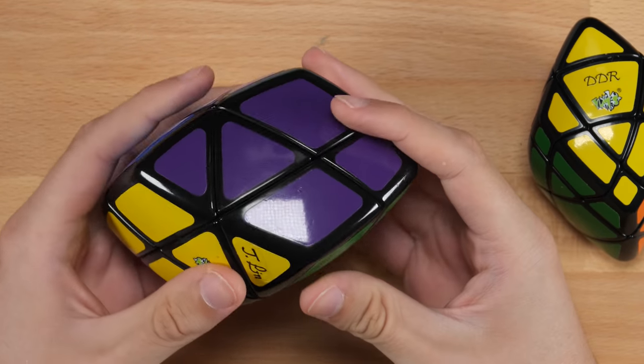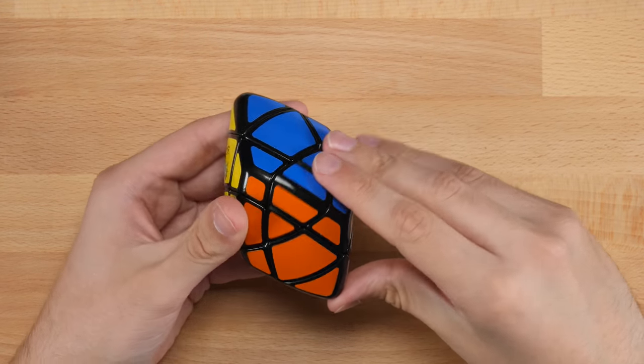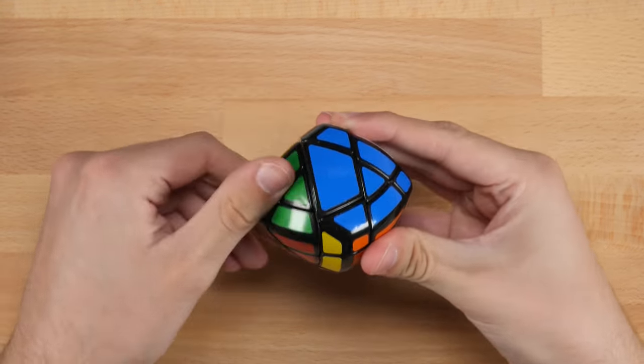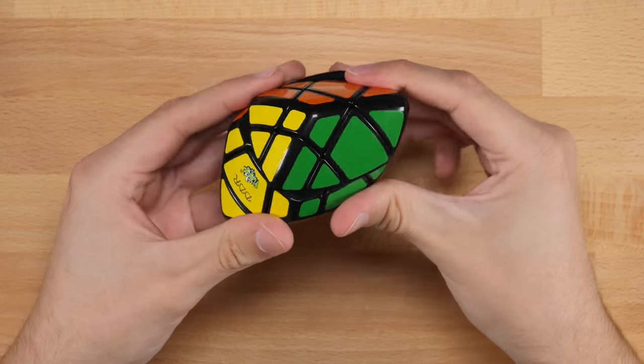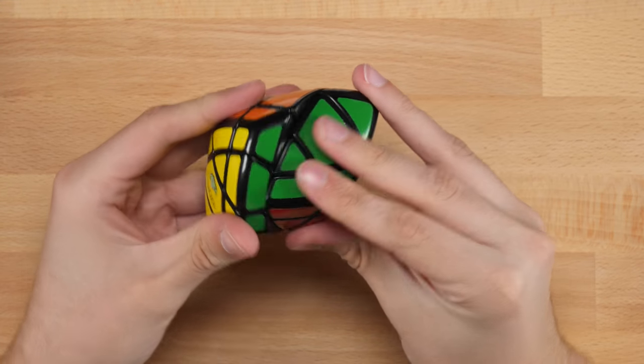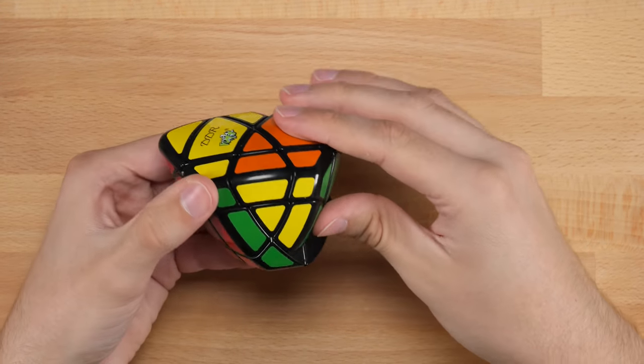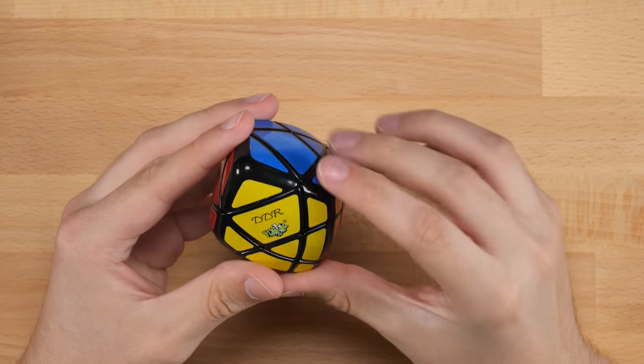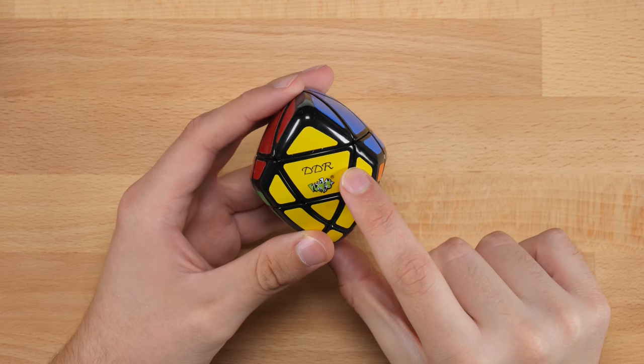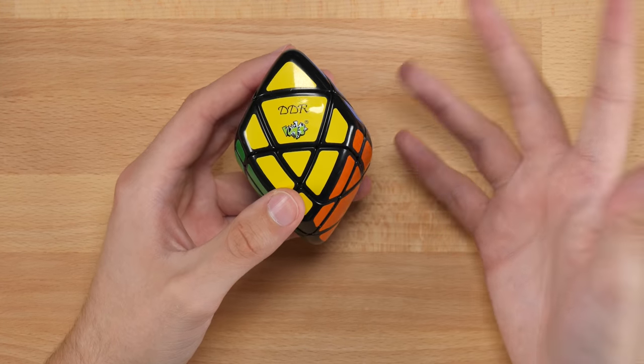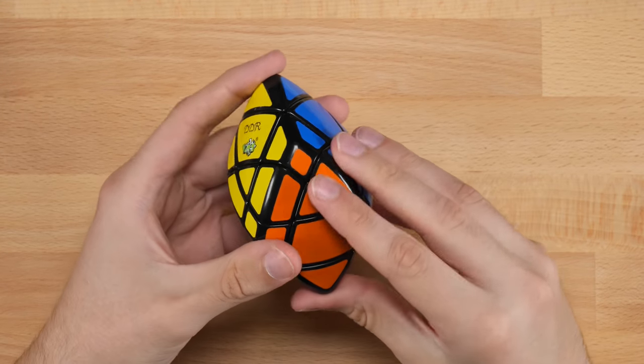So this is the cube shape mod that I was referring to. This one is much, much bigger, but this is also made by Lanlan. Okay, so this should definitely be a pretty easy puzzle to solve. Let's go ahead and actually do some turns first of all, though. Yeah, it pretty much feels exactly like a standard Lanlan puzzle, Lanlan 3x3. Not too great of turning, but not terrible. A bit slow, a bit too slow, but it's all right. It looks like for the logos, we have the standard Lanlan logo as well as a DDR logo. I'm assuming the initials of the person who designed this puzzle.